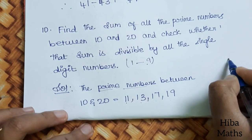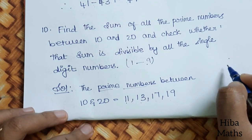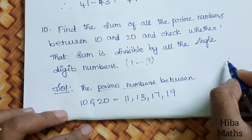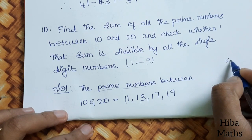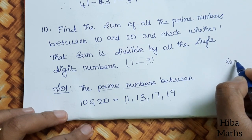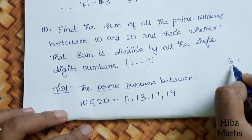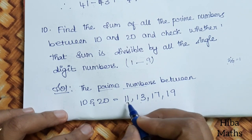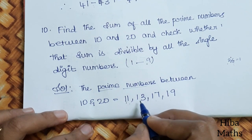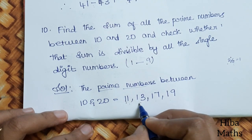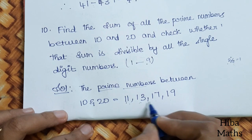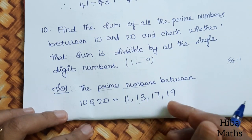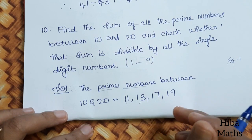Which number is the most divisible number? 2 is the most divisible number. Any number is divisible by its own table — for example, 11 is in the 11 table, and 13 is in the 13 table. These are the prime numbers for this video.